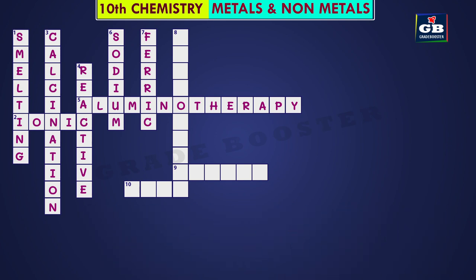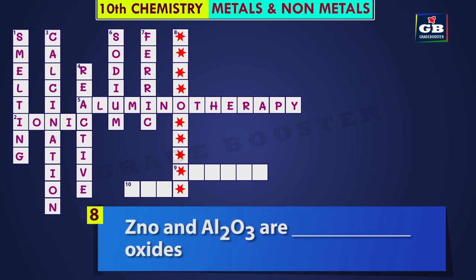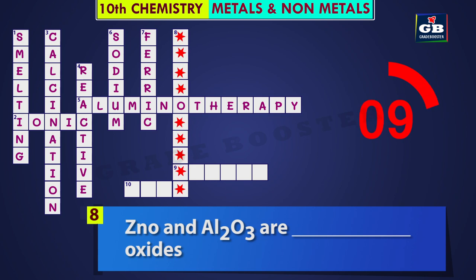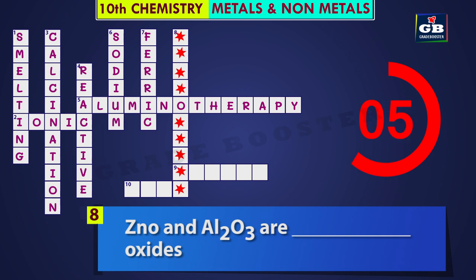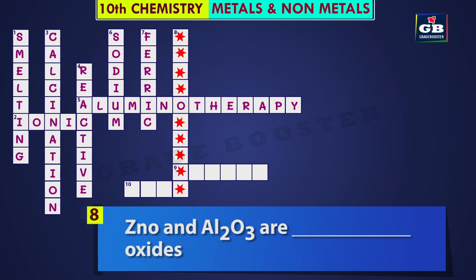Let us see the next one. Eight down: ZnO and Al2O3 are dash oxides. Amphoteric oxides — did you get it? The answer is amphoteric oxides. ZnO and Al2O3 are amphoteric oxides.